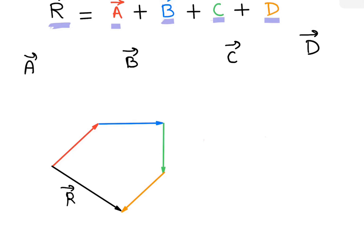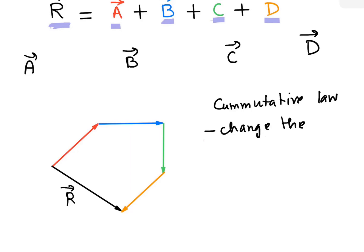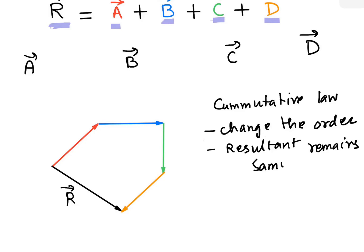Addition of more than two vectors also follows the commutative law, which means even if we change the order of addition of the vectors, the resultant remains the same.